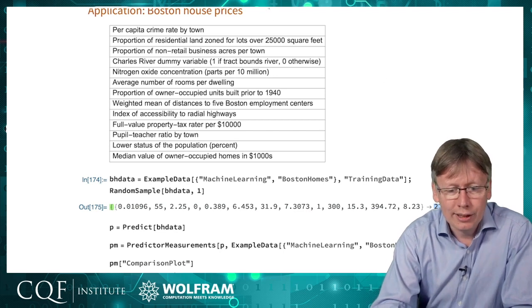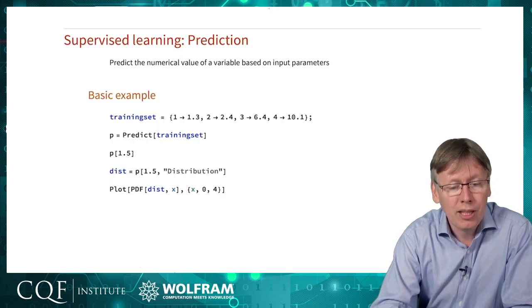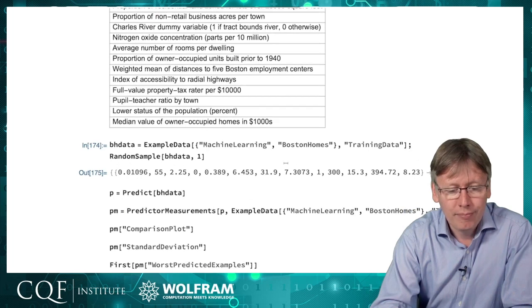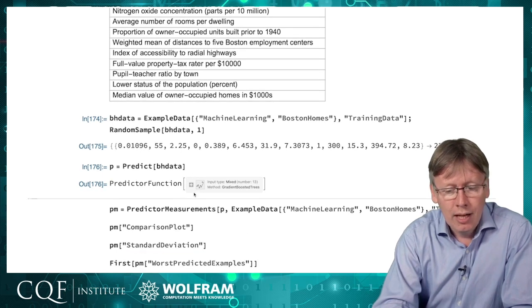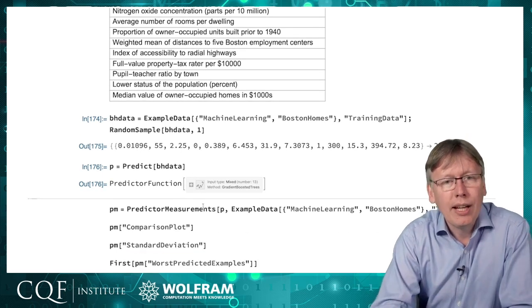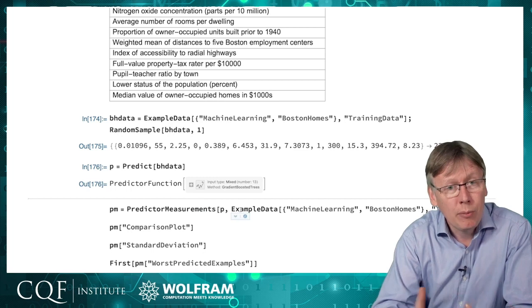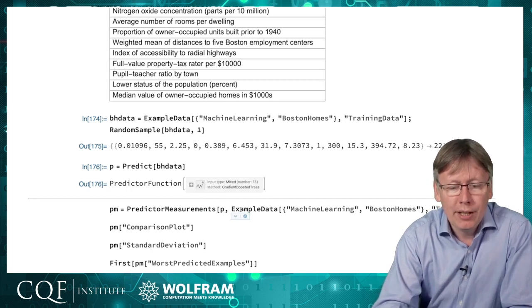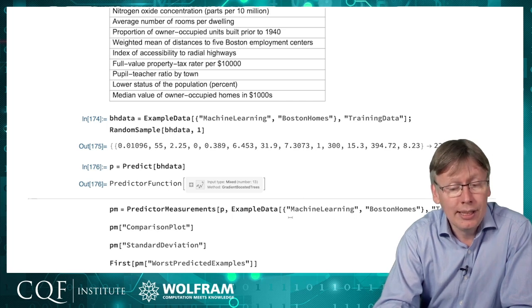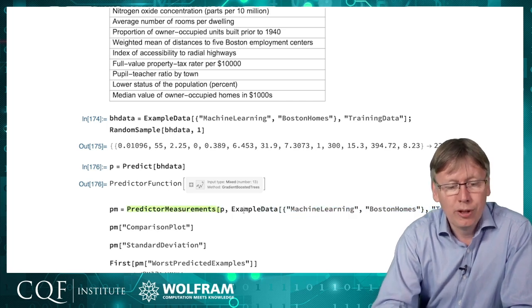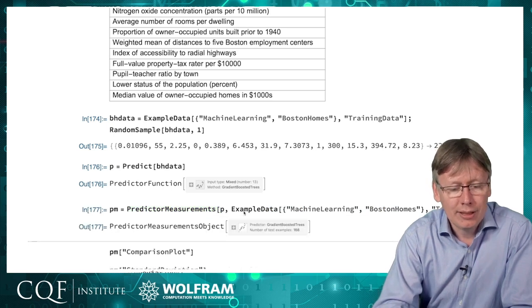This is exactly analogous to this trivial example we did a moment ago. Input and output, just that we've got a 10-dimensional or so input now. We use it exactly the same way. We just say predict on that data. It builds our predictor function. Now we want to see how well that has performed. Just like with classification, we want to compare it against a training set that we held back.